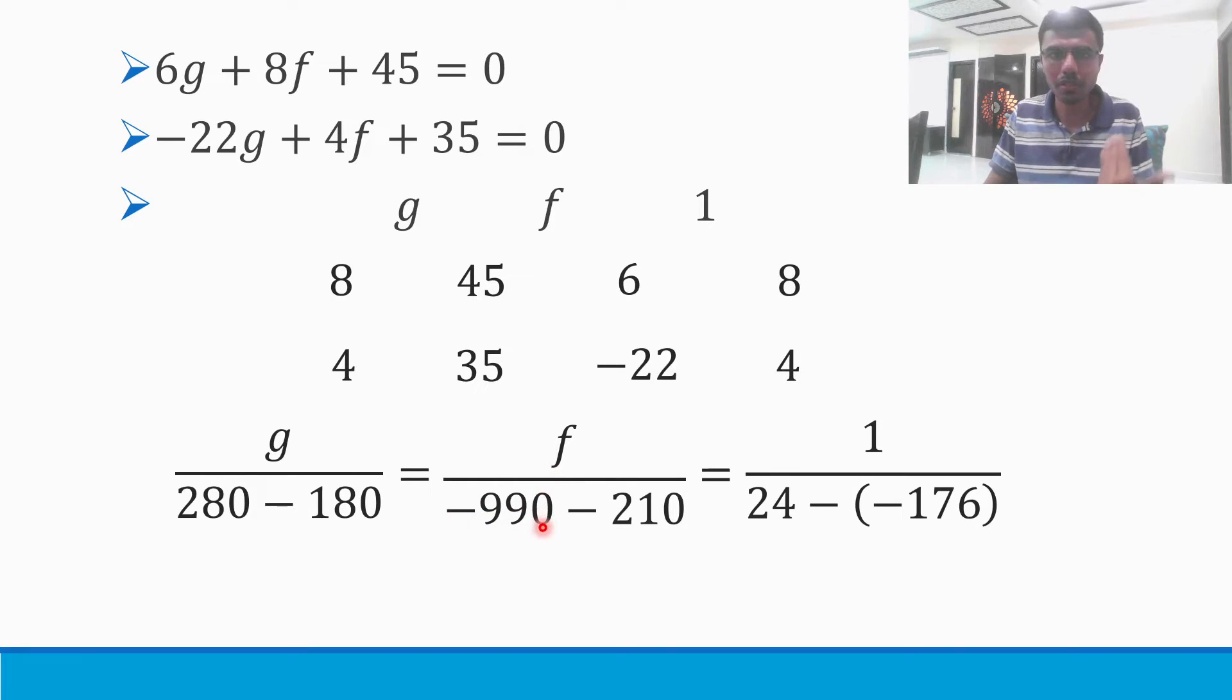So 280 - 180 is 100. g/100 equals—this is -990 - 210. Be careful here. You need to add them and put a minus sign. 990 + 210 is 1200, and both are minus, so ultimately the final answer is minus. So g/100 = f/(-1200).